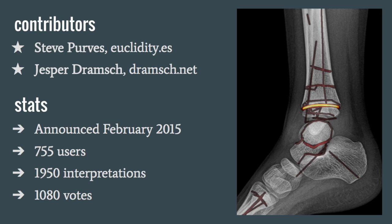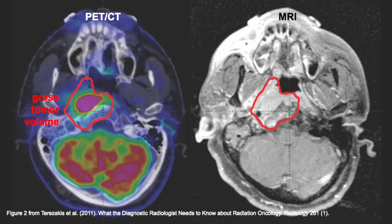Outside of that original team, there have been some other contributors. Steve Purvis, a fantastic programmer in Spain, has contributed a lot of the trickier functionality — for example, we have random cohorts so you can do sort of blind clinical-style trials against different groups with different images. And Jesper Dransch, a student in Germany, has also contributed to the code base. We've had over 750 users, nearly 2,000 interpretations, and people are actually voting on interpretations, which is really cool to see.